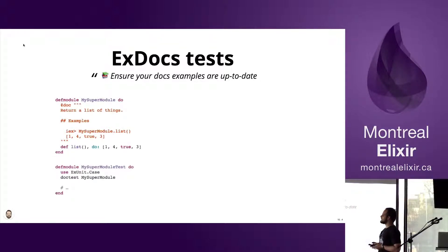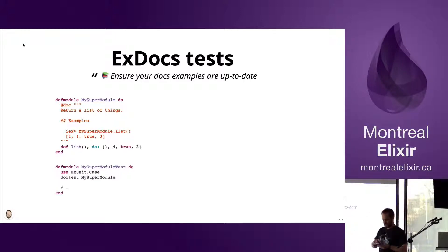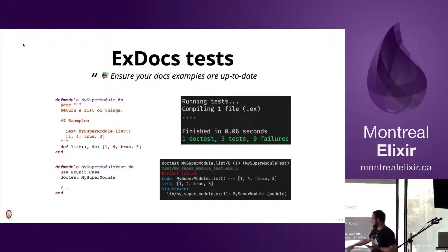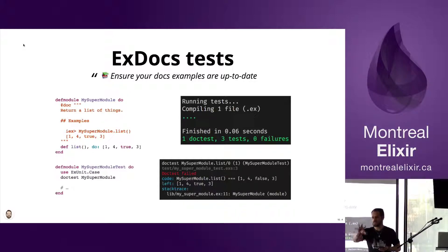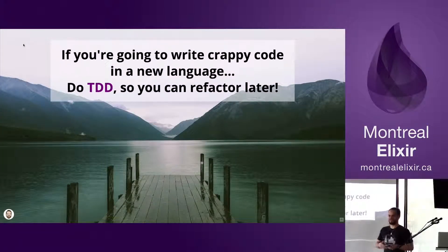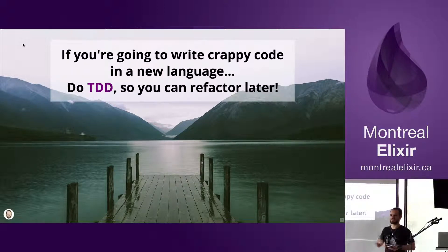I'll conclude with ExDoc. Documentation is also a first-class citizen in Elixir, just like tests. You put code samples in your module documentation, and with just the doctest line of code, you can run the actual examples in your tests. It's not a substitute for testing, but it ensures your documentation examples are always up to date. So, if you're going to try a new language, do TDD — if you write some rough code because you don't know the language yet, at least it's tested so you can refactor later. Thank you.